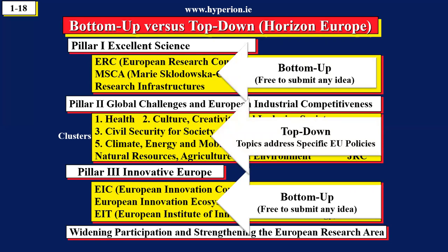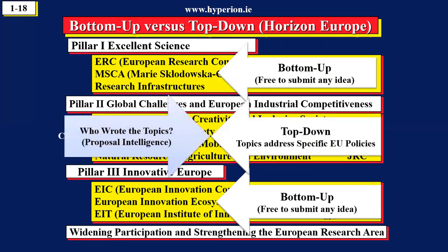In Pillar 2, you have to read a 400-page document. You look at the table of contents, you identify the topic. But then something else is needed. You need to know what's the background to that topic — who wrote the topic? Because it can take up to two years to design these particular work programs. So if you're not aware of the expert groups consulted, the policies behind it — this is what we mean by proposal intelligence.